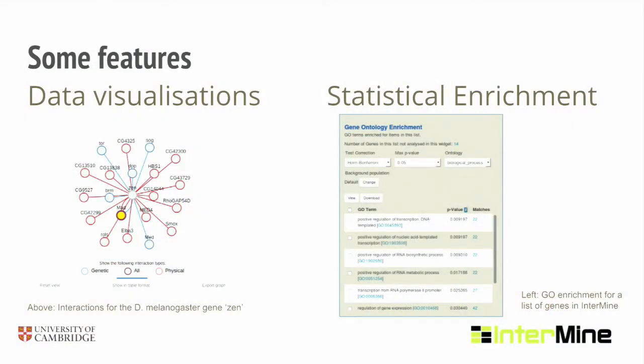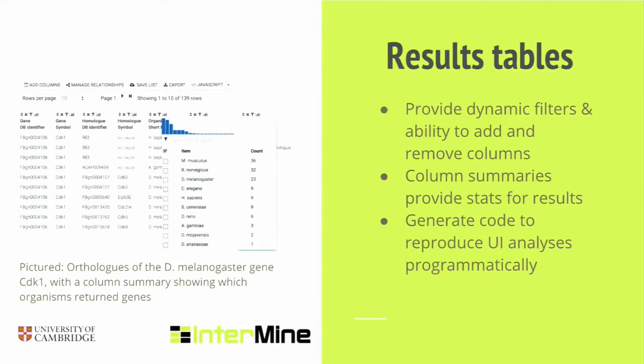Some of the things the GUI can do: we have various visualizations. You might want to look up a gene that interests you and get interaction information about that gene. Or you might have a set of genes or proteins, and we can actually perform statistical enrichment on those sets. The idea is that you can perform analyses in a really easy way. We also have snazzy results tables — for example, a table showing genes and their homologues, and by clicking on a column summary you can see the breakdown, like genes in mouse that are homologues for the CDK1 gene.